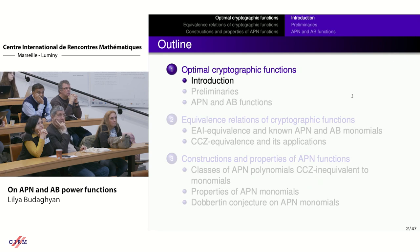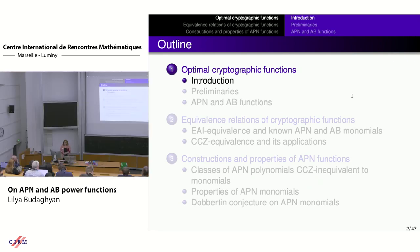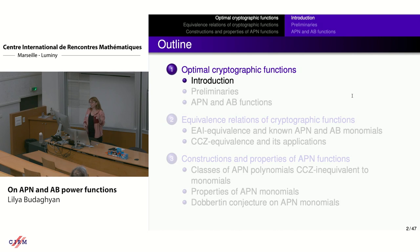My talk is organized in the following way. I will start with a short introduction, then fix some basic notions and introduce notations for cryptographic functions, in particular for APN and AB functions. Then we will talk about different equivalence relations which preserve the main cryptographic properties, then discuss different constructions and properties, and in the end concentrate more on power functions and discuss big open problems.